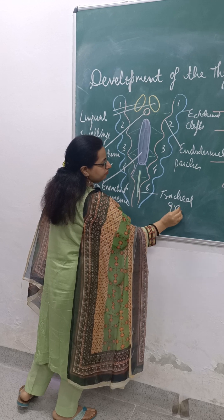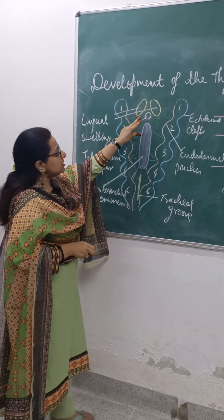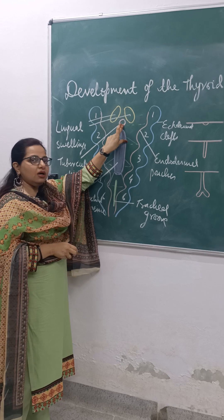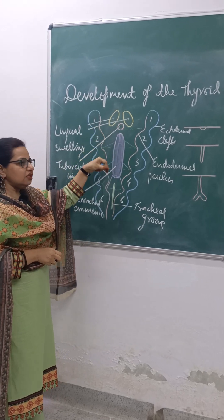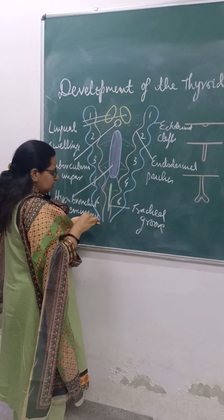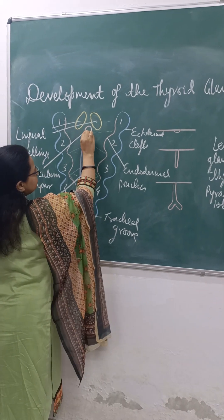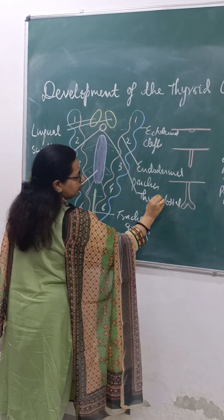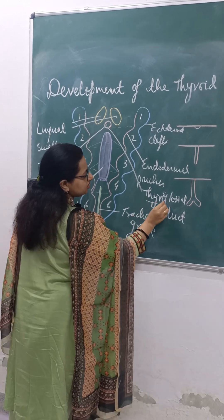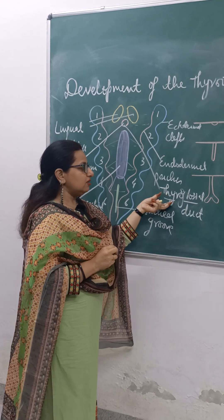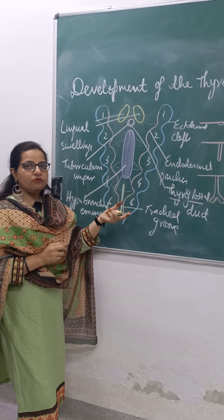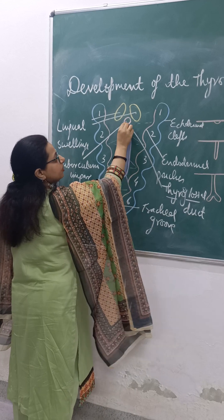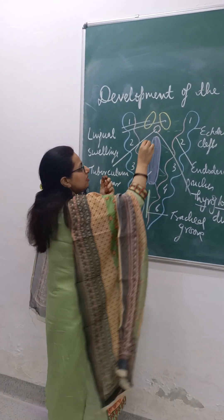Now it is beyond the tuberculum impar where a depression appears, and this depression grows in the neck in the midline giving rise to a thyroglossal duct. As the name suggests, it is made up of two words — thyro and glossal, where glossal means tongue and thyro means thyroid. The thyroglossal duct leads ultimately to the formation of the thyroid gland. The depression formed because of this diverticulum is known as the foramen cecum.